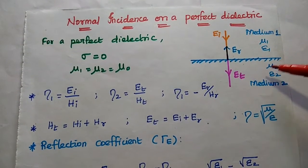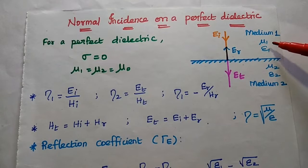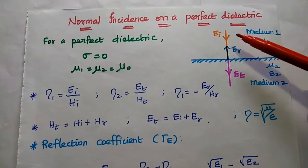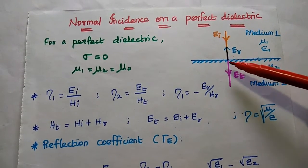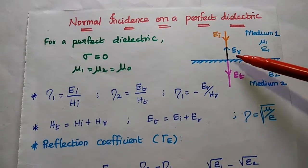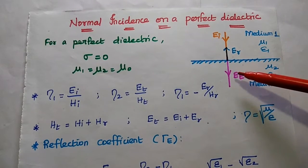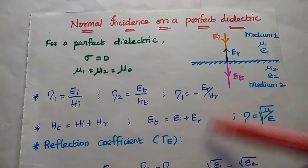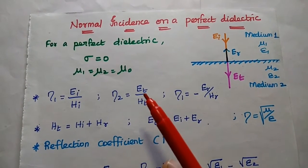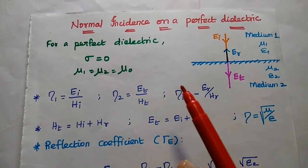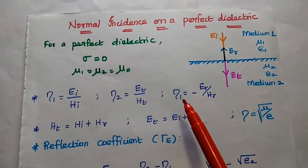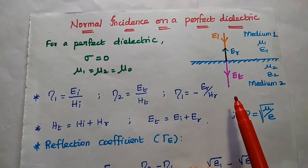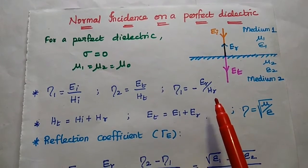Here we can consider two media with different parameters. When the signal is incident normally on this interface, part of the signal is transmitted and part of the signal is reflected back. For a perfect dielectric medium, the conductivity is 0 and its relative permeability is equal to mu naught value.